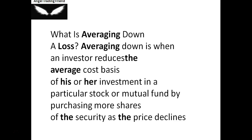Averaging down is when an investor reduces the average cost basis of his or her investment in a particular stock or mutual fund by purchasing more shares of this security as the price declines. You would have seen the program called SIP — Systematic Investment Plan. Most brokers and advisors say don't invest a bulk amount into any stock or mutual fund; they promote you to use SIP, meaning you invest a small amount monthly. The reason is the market keeps fluctuating — if you buy everything today at a high price and the market comes down, you will be making a loss. But if you buy small amounts each month, it takes the average.